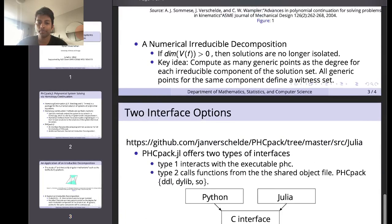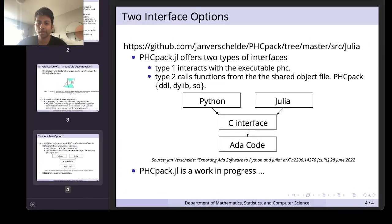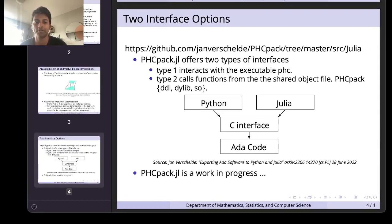Let's finally discuss the two interface options that we provide here. PHCPACK.jl has two different types of interfaces. In the type one interface, we have a native Julia application that obtains the inputs from the user, processes it in native Julia data structures, calls the executable within Julia, obtains the output and then returns that output in Julia data structures to the user.